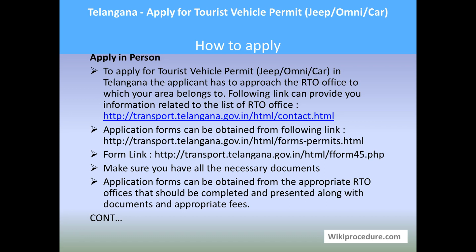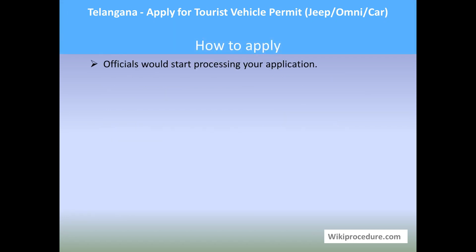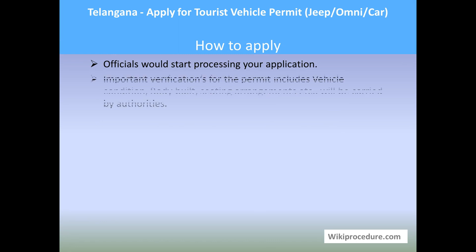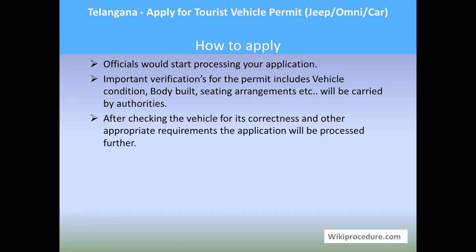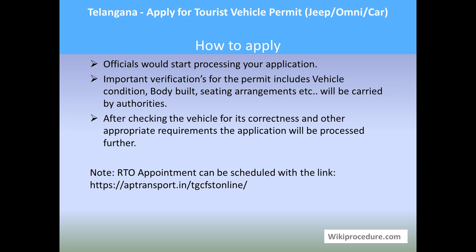Application forms can also be obtained from the appropriate RTO offices. They should be completed and presented along with the documents and appropriate fees at the right counter. Officials would start processing your application and will do important verifications of the vehicle, including vehicle condition, vehicle type, seating arrangements, and all other mandatory requirements. After checking the vehicle for correctness and appropriate requirements, the application will be processed further.